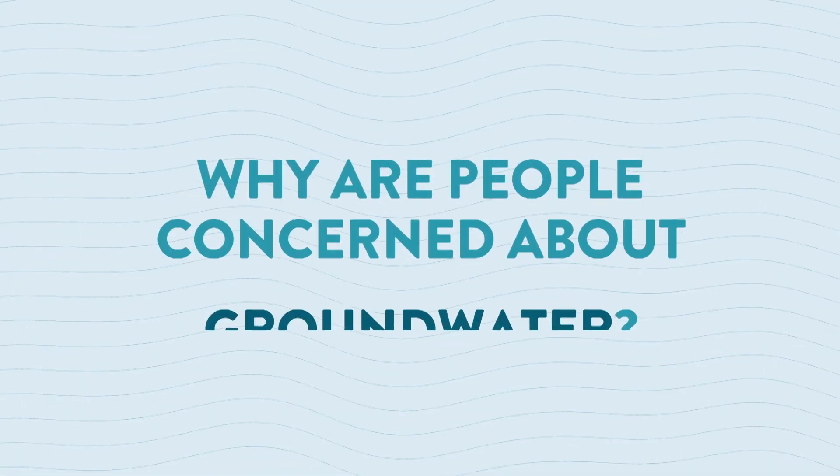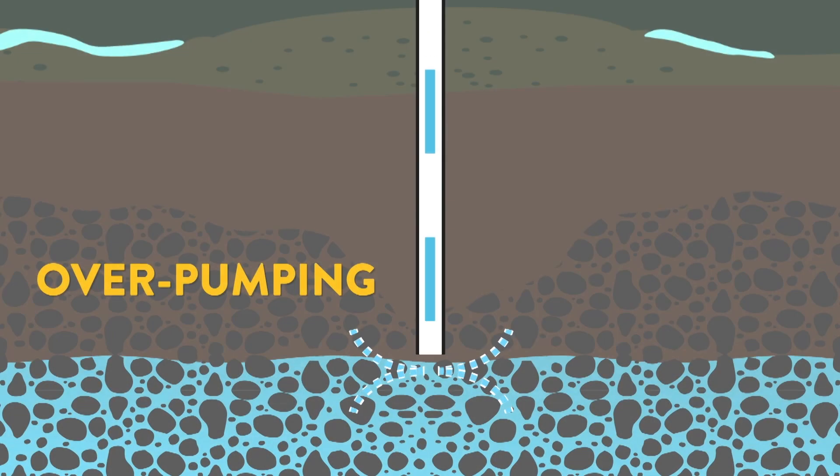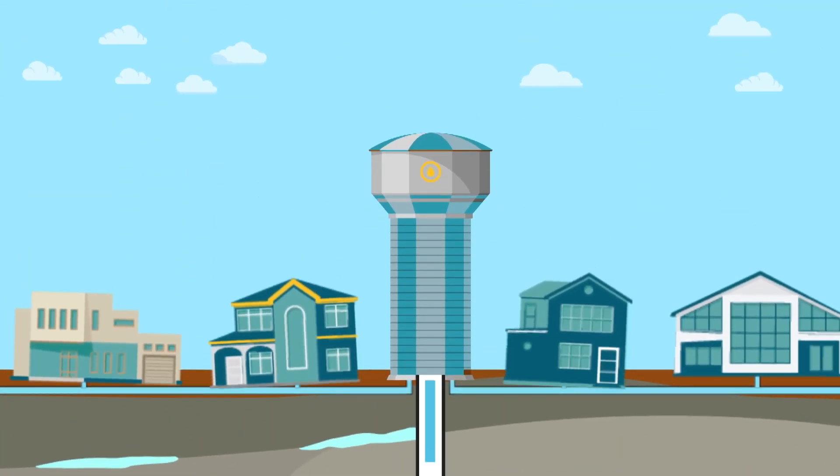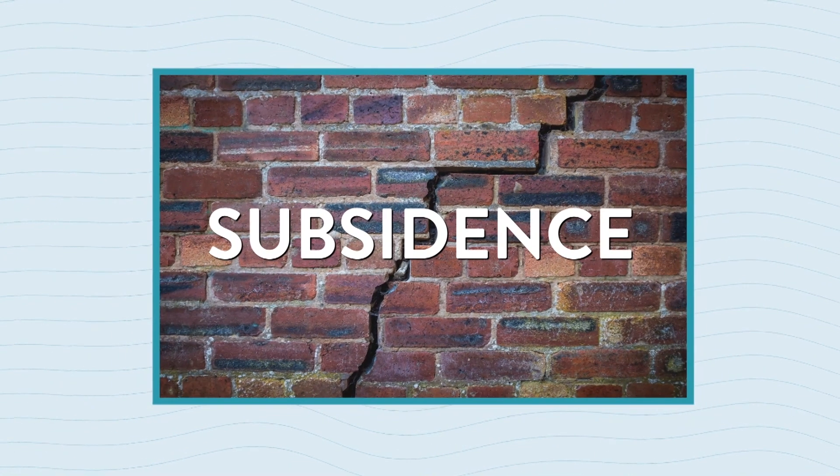Why are some people concerned about groundwater? For many years people over-pumped groundwater without replacing it. Over-pumping can lead to serious problems. It can cause the land above to collapse and sink. This is called subsidence.